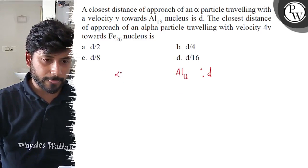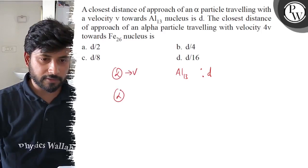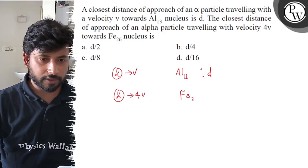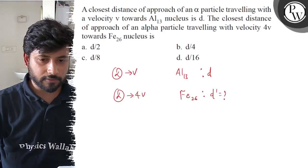In the first case, an alpha particle has velocity V, and in the other case, an alpha particle has velocity 4V, approaching the iron nucleus. What is the distance of closest approach?